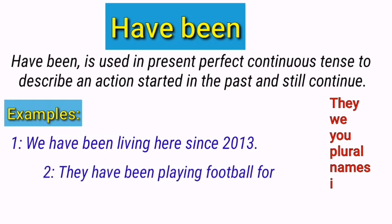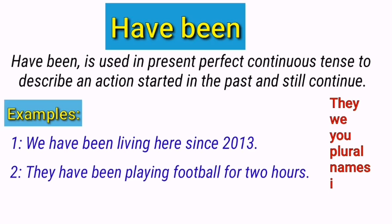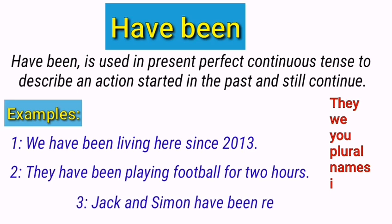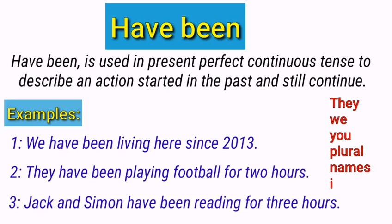They have been playing football for two hours. 'Have been' is used with the subject 'they,' and it is also present perfect continuous tense. Jack and Simon have been reading for three hours. Here we have plural names — Jack and Simon — so 'have been' is used to form present perfect continuous tense.